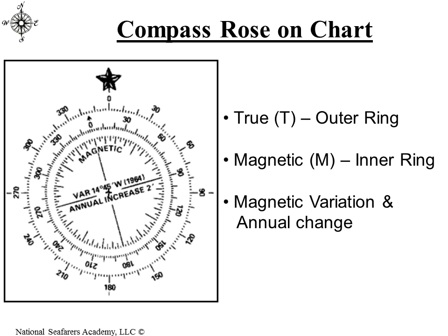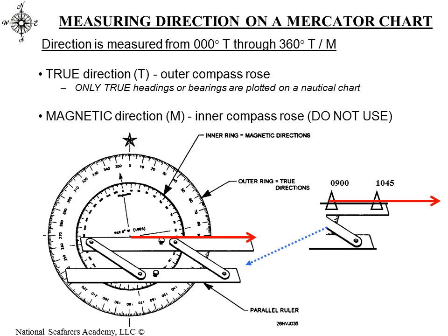We can also determine variation from inside the compass rose. For Coast Guard questions, they're going to give us the magnetic variation, and we're going to use whatever they give us for the problems — we're not going to use the variation in the center of the compass rose on the training chart. If we had two fixes, say a 9 o'clock fix and a 1045 fix, we can use parallel rulers to line up with the two fixes, then walk the parallel rulers to the nearest compass rose and read from the outside to get our true course.